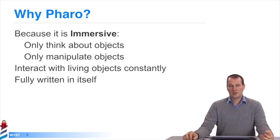As an example, loops don't exist as constructors in Pharo. They're messages sent to objects that are collections. Conditions are messages sent to objects that are booleans. So, you'll constantly be interacting with living objects.